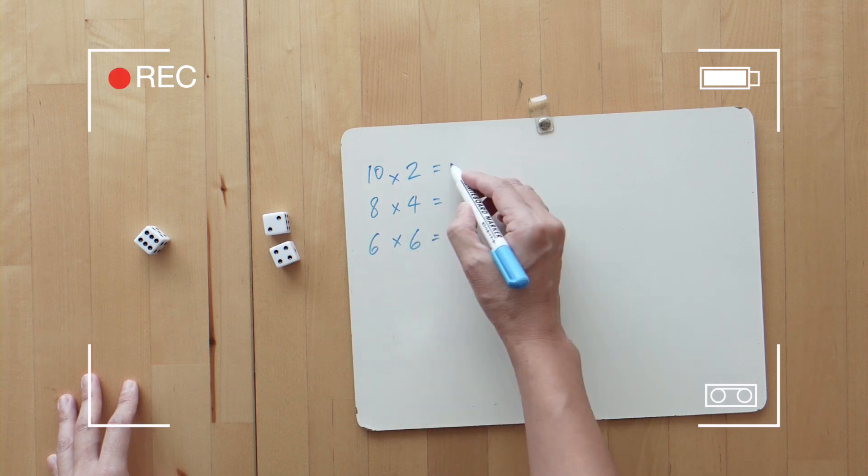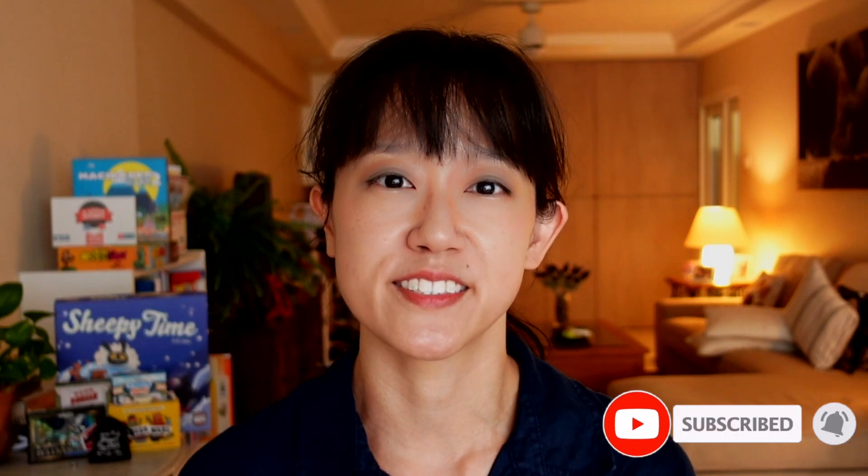So we would get 20, 32, or 36. What I like about this game is that by using 3 dice in 1 roll, we can get up to 6 permutations of equations which kids can work through to come up with the largest product. Make sure to check out the link to the video in the description box below after this video.